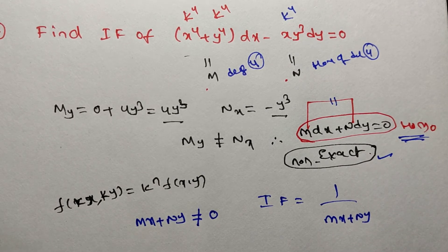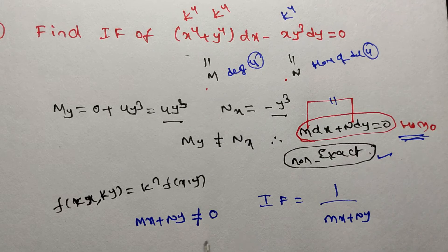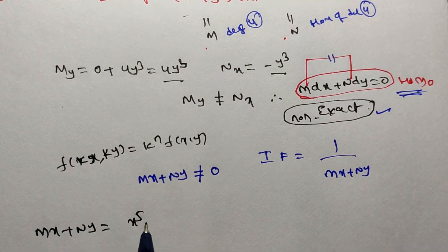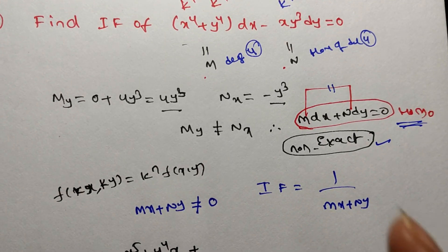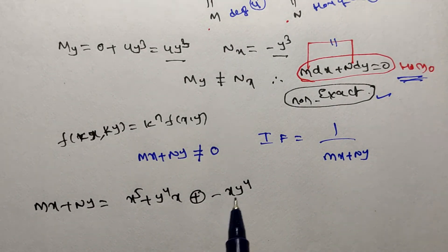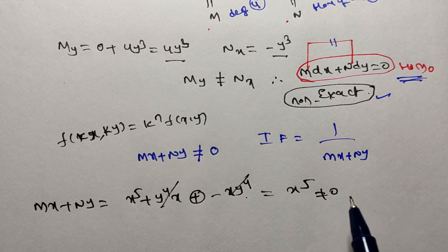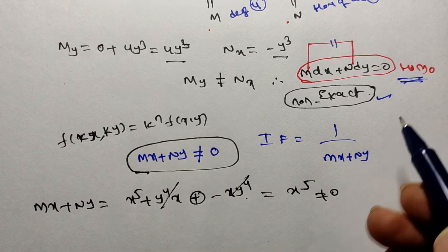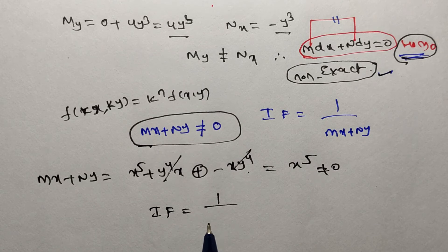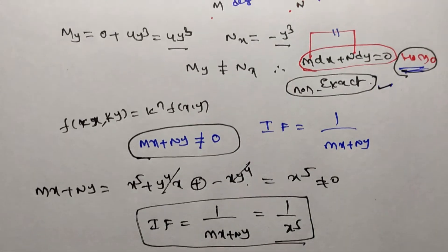I am verifying mx plus ny. Multiplying x to M: x to the power 4 times x is x to the power 5, plus y to the power 4 times x is xy to the power 4. Multiplying y to N: minus xy cubed times y is minus xy to the power 4. The terms plus xy to the power 4 and minus xy to the power 4 cancel, leaving x to the power 5, which is not equal to 0. So mx plus ny is not equal to 0, and the integrating factor is 1 by x to the power 5.